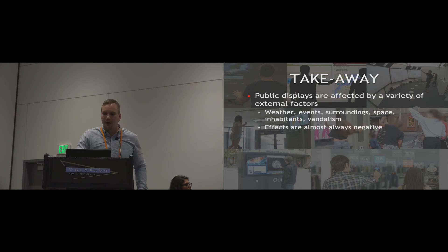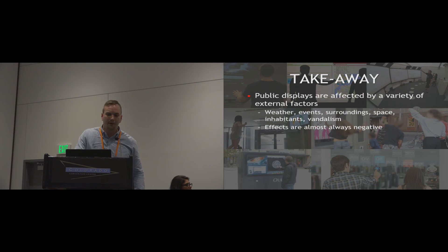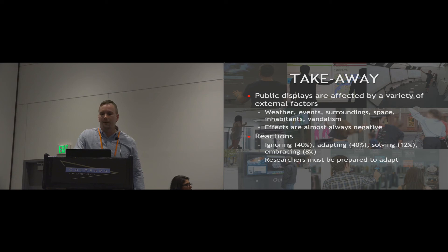In conclusion, public displays are affected by a variety of external factors. We identified six categories: weather, events, surroundings, space, inhabitants, and vandalism. Furthermore, we found that the effects are almost always negative, which highlights the importance of dealing with these issues. We also identified four levels of reactions to observed effects: ignoring, adapting, solving, and embracing. Ignoring and adapting were much more frequent responses, highlighting the surprising nature of these issues and how difficult they are to solve completely or take advantage of. Therefore, researchers must be prepared to adapt.